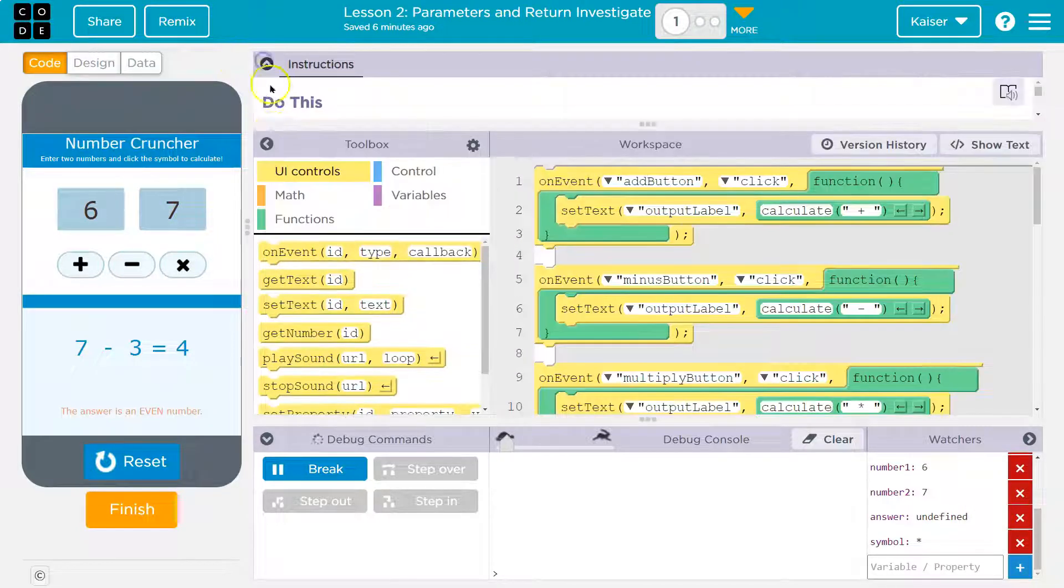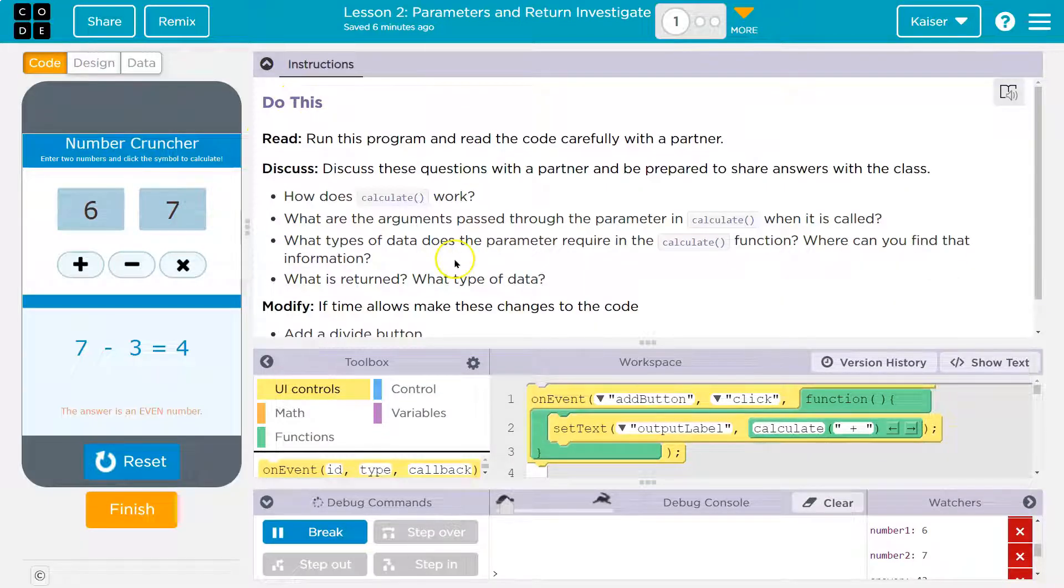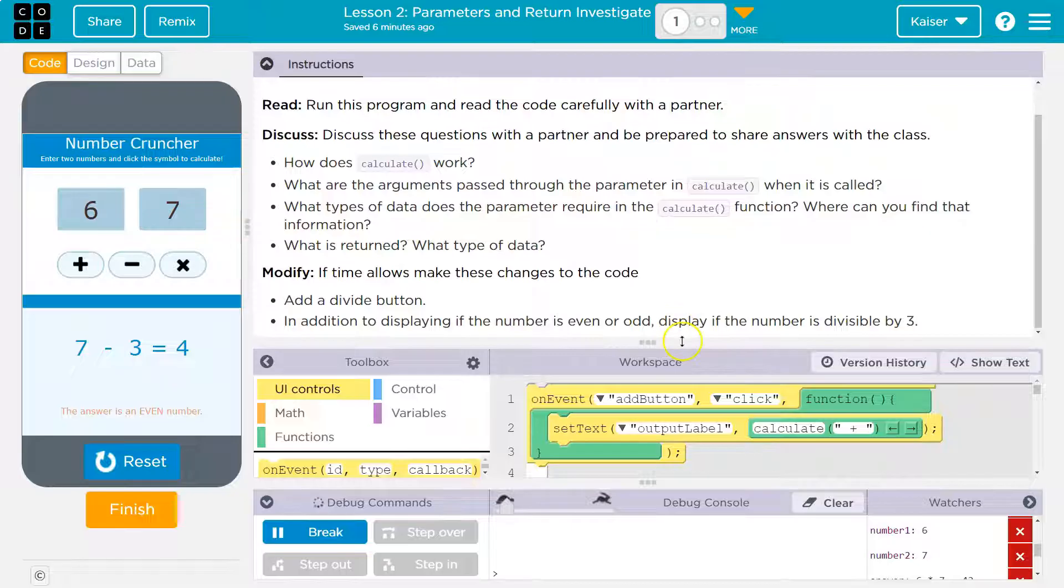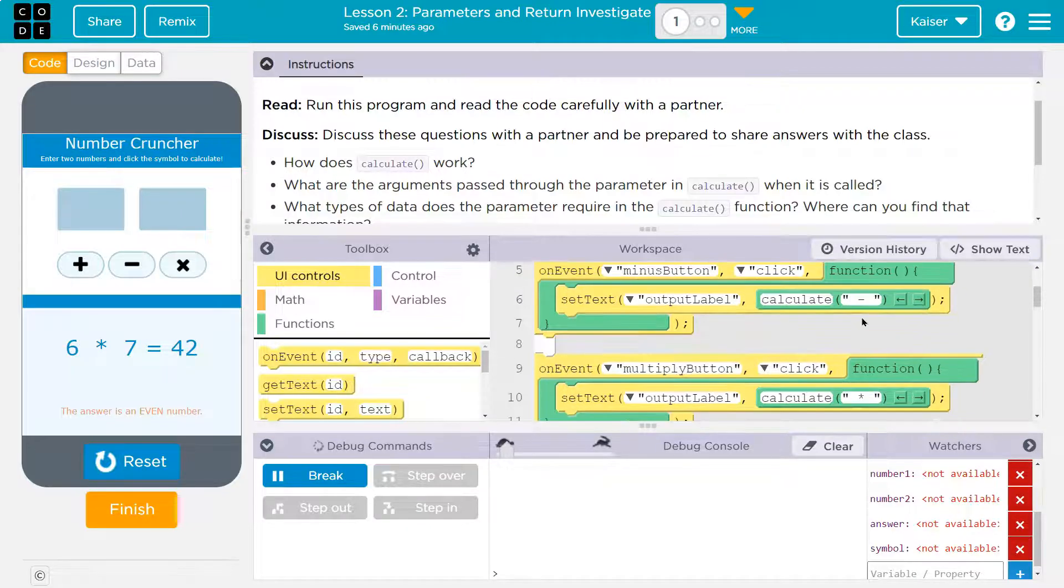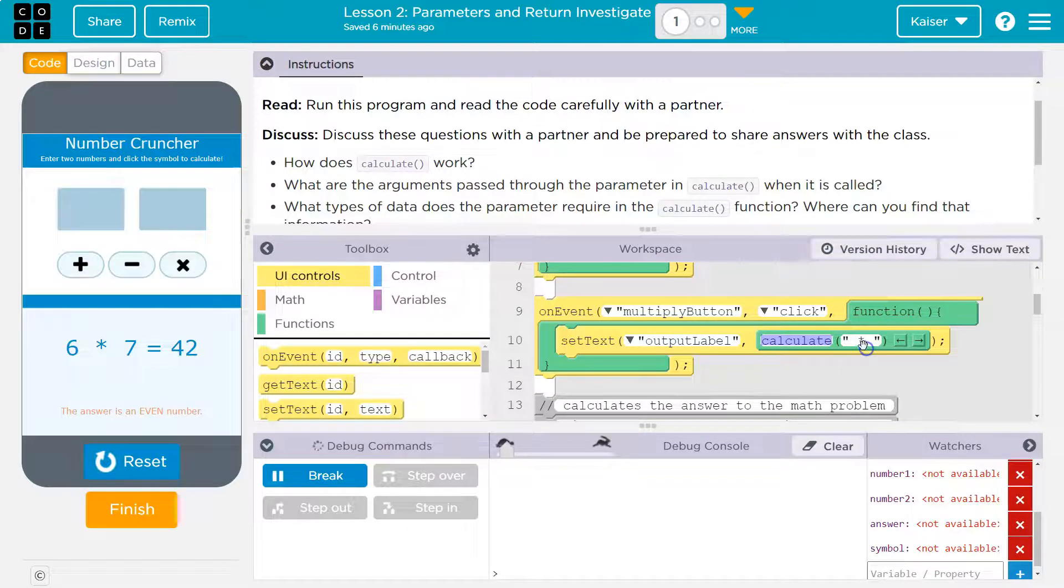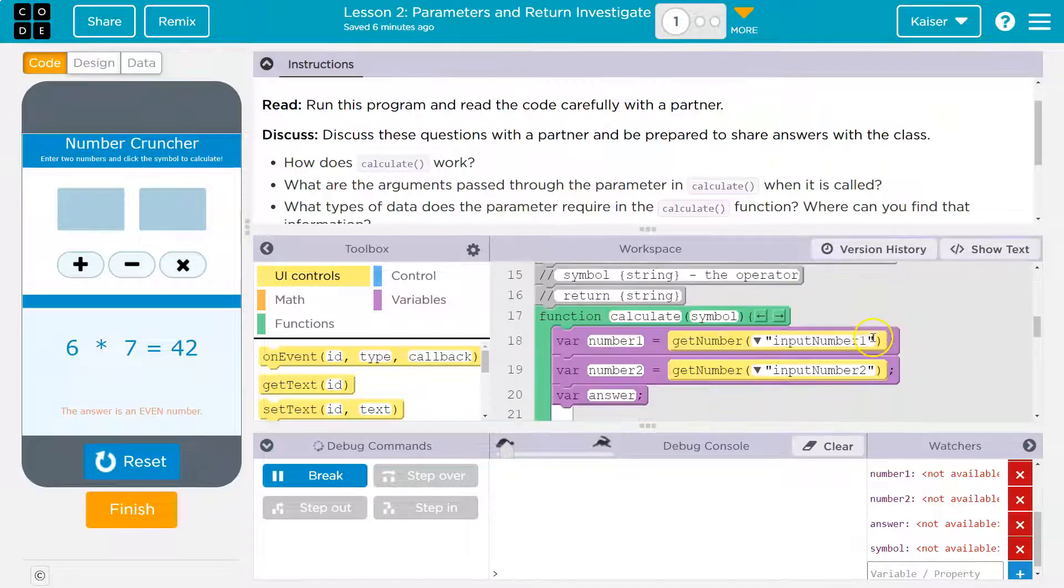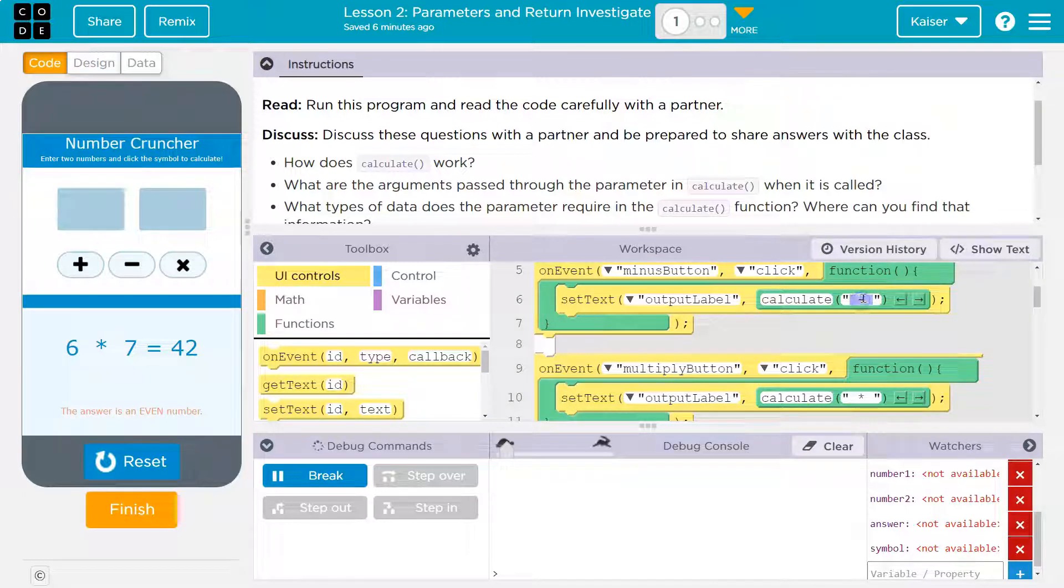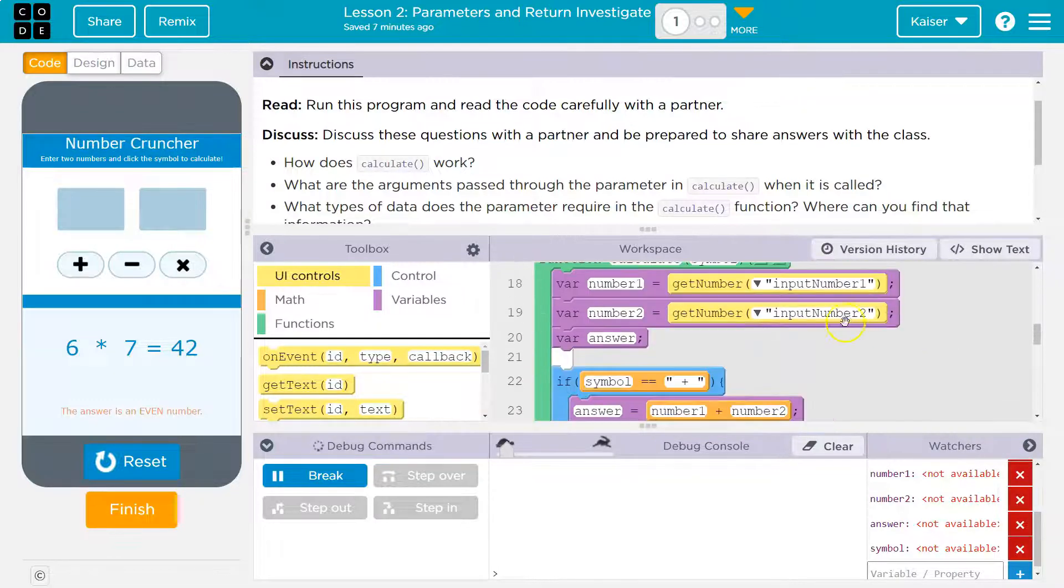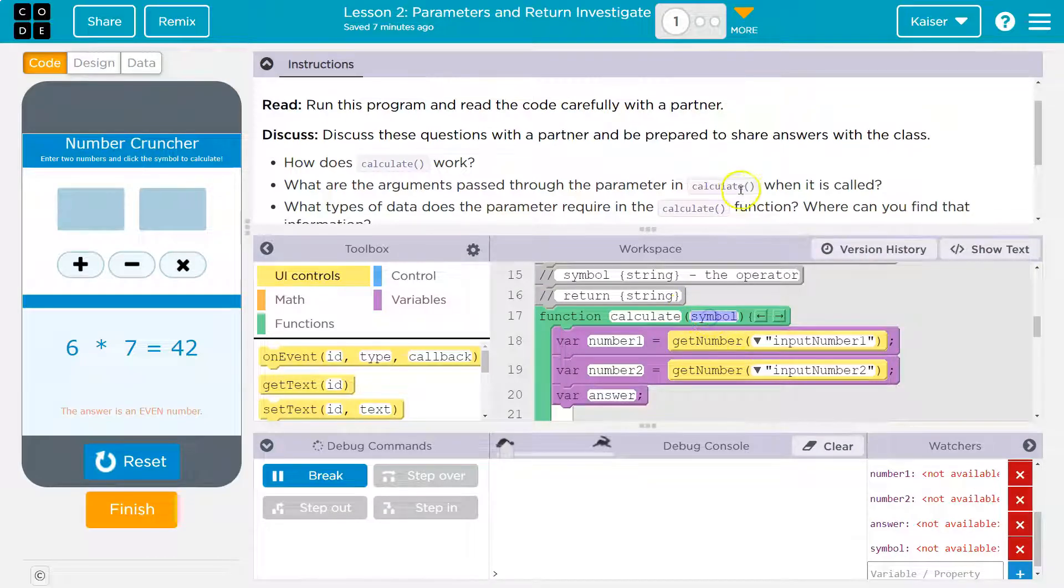Let's see if they give us a bit more. What are the arguments passed through the parameter and calculate when it is called? The arguments are this, and this is annoying. An argument is the item that is passed. So plus, minus, and times symbol with the space around it, that's the argument. What the parameter is, is the word here. Symbol is the parameter. You can kind of think of it like a variable, right? So symbol is the variable name. Symbol is the parameter. The argument that is the thing that symbol is getting. So here, the argument is negative. Here, the argument is a multiplication sign. Here, the argument is plus. The parameter, when this function was created, is symbol.